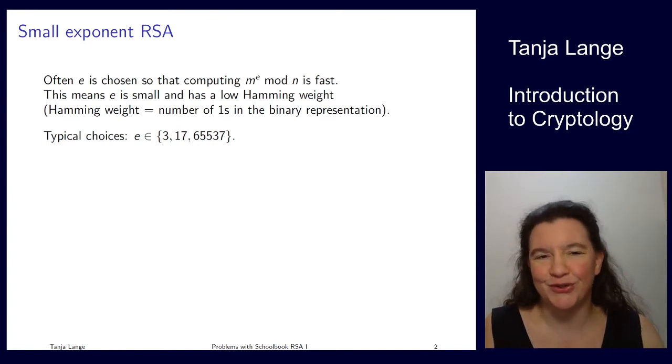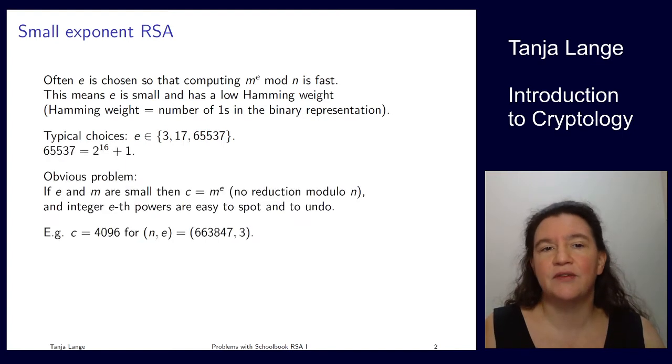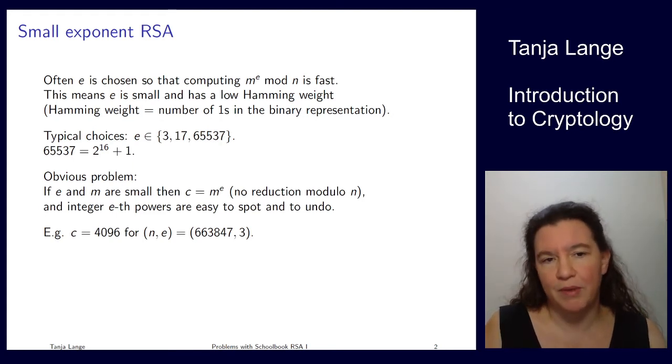And of course you also want to have the system to be secure. So the typical choices here, the 3 and the 17 are kind of obvious, and there's also the 65537. Now 65537 is one of those numbers that you should remember for the next pub quiz. 65537 is 2 to the 16 plus 1. So Hamming weight is just 2. That means you need 16 squarings and 1 multiplication.